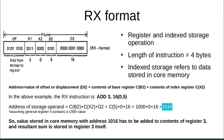This instruction will take the value from memory location 1016 and add it to the contents of register 3, storing the result back in register 3. So the instruction ADD 3, 160(0,5) adds the content from memory location 1016 to register 3 and stores it in register 3. For most purposes in this course, we will be using the RX format, so make sure you understand it.